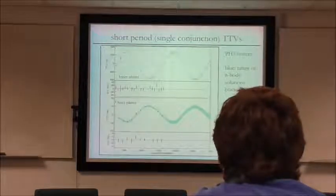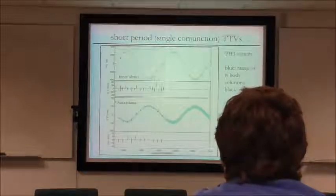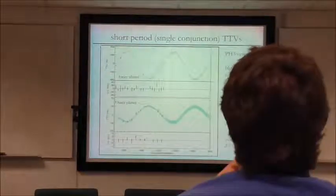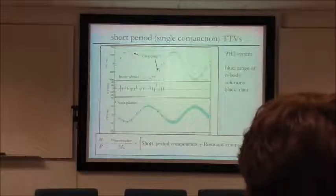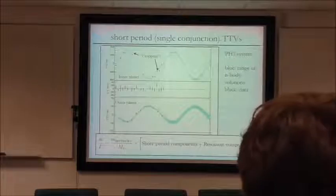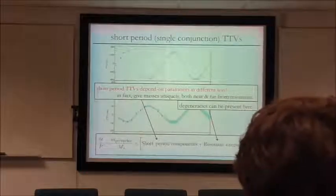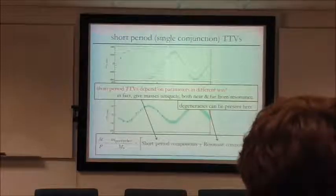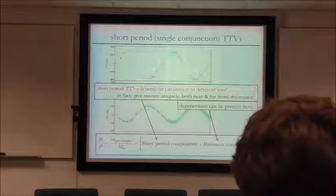The work I did with Eric Agle was to understand how you get mass measurements in this case. Instead of studying just the slow sinusoidal variation where small perturbations accumulate, you go back to the conjunction-to-conjunction transit variations — the small kicks that occur every single time the planets meet. These are what we call chopping. The key idea is that transit timing variations for a planet include both the resonant component (which has degeneracies) and these short-period chopping terms from each conjunction, and those depend on parameters in a different way. As I'll show, these short-period chopping TTVs give the mass uniquely, without any eccentricity contribution.